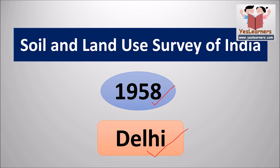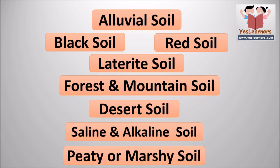There are various types of soils found in India and the formation of soil is primarily influenced by major factors such as climate, natural vegetation and droughts. The Indian Council of Agricultural Research has divided Indian soils into the following groups: alluvial soil, black soil, red soil, laterite soil, forest and mountain soil, desert soil, saline and alkaline soil, and peaty or marshy soil.